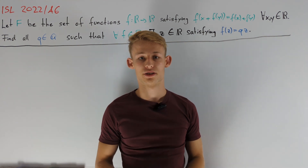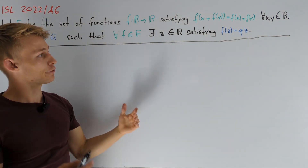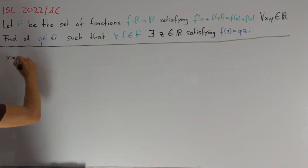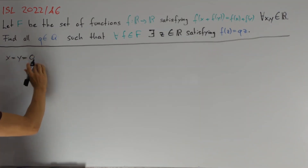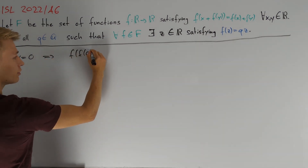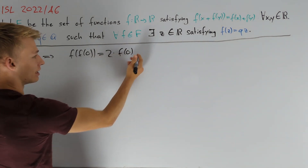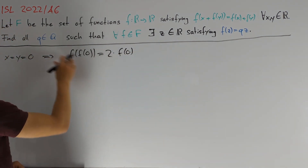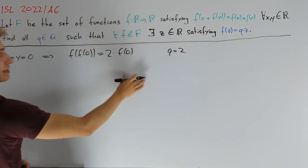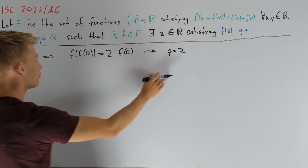First, we try to figure out some properties of all the functions in our set F. We try the standard approach of plugging in x equals y equals zero in the functional equation. This yields that f of f of zero is equal to two times f of zero, and here we indeed found our first rational number q. Namely, q equals two satisfies this condition for z equals f of zero.